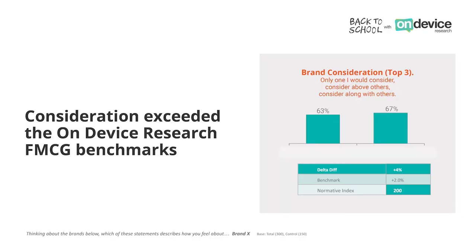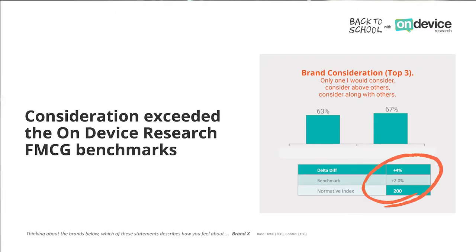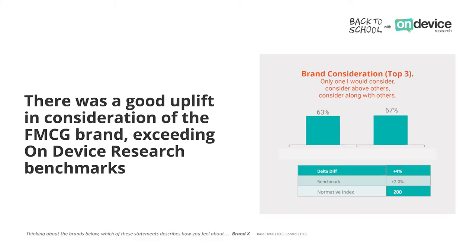Looking at other common metrics used within brand impact studies, let's say we look further down the brand funnel to consideration. We saw a 4% uplift for those exposed to the campaign versus a control group. This isn't a statistically significant shift, but for the brand it's still a success. FMCG products are already especially highly considered, meaning people don't think too much when purchasing them, so it's harder to shift that consideration metric for brands.